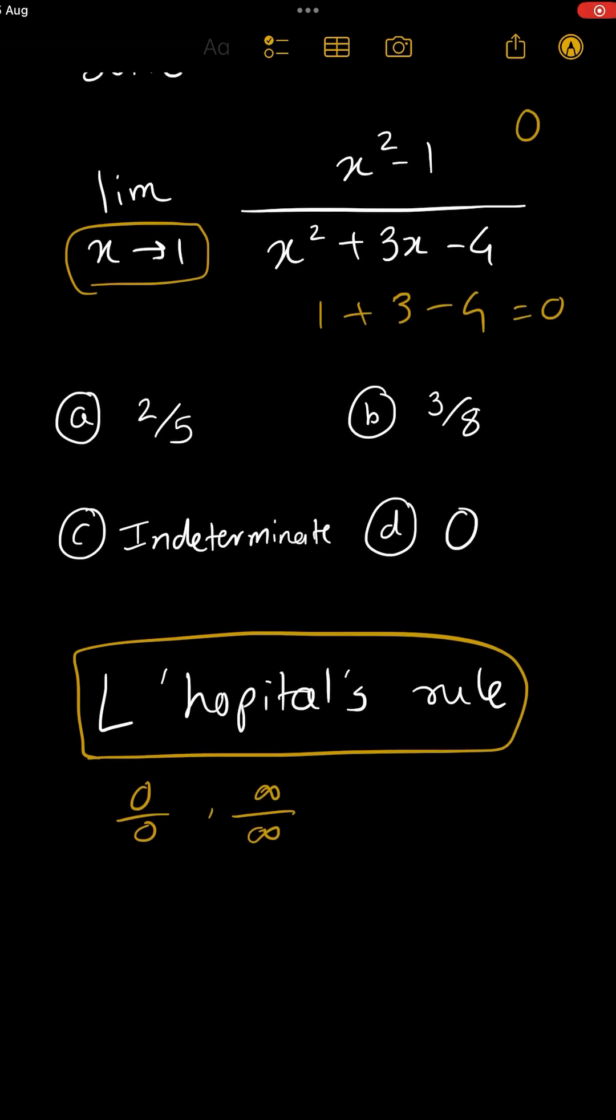What is the rule? Take derivative of numerator and derivative of denominator. Derivative of numerator will be 2x upon derivative of denominator will be 2x plus 3.